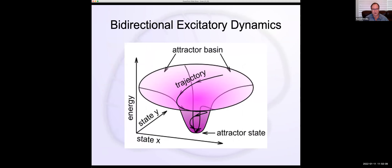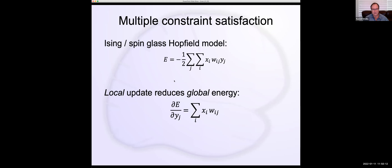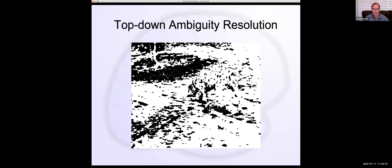That's why the Hopfield model is a very nice framework for understanding cognition — you're trying to make sense of things in a way that obeys these constraints. You don't need to reach the ultimate global minimum; local minima are usually pretty reasonable. These ideas are often illustrated through classic ambiguous figures.